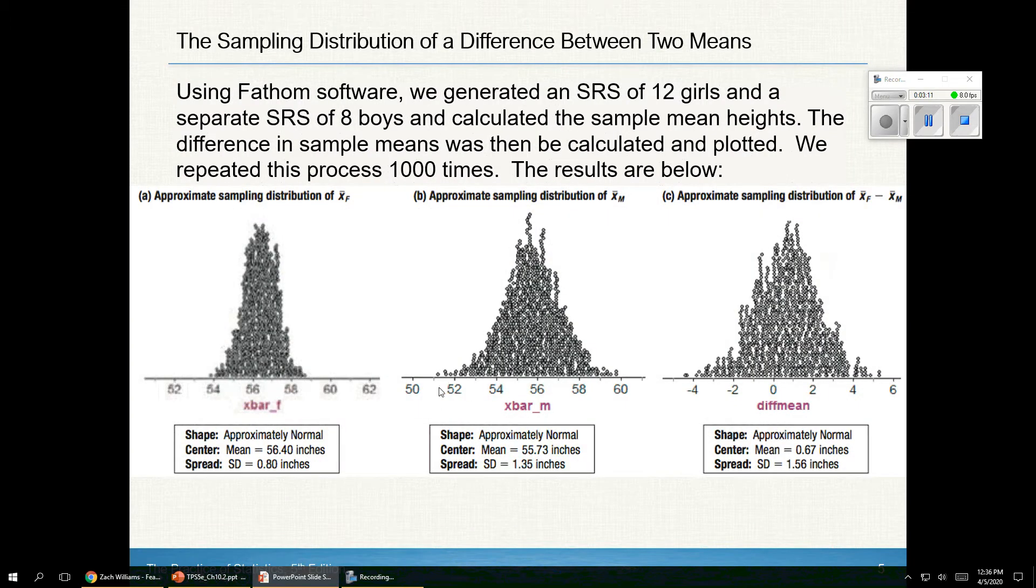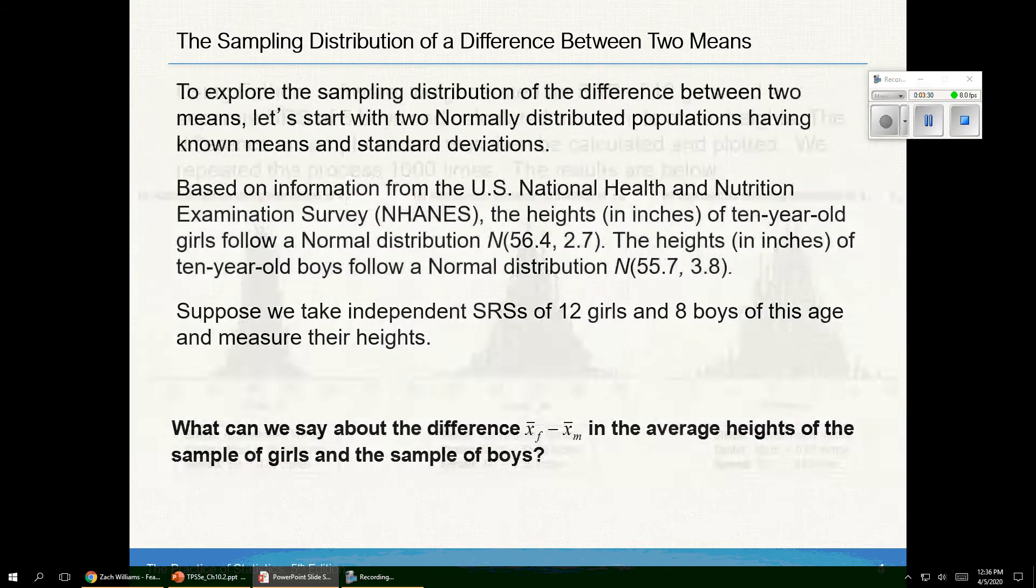And as we take those numbers and we divide this by the square root of n, this sample size was bigger. So that also squeezes it in. The mean here is 56.4 with a standard deviation of 0.8.